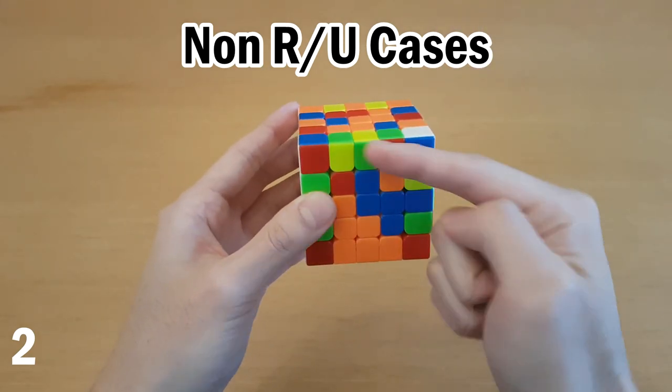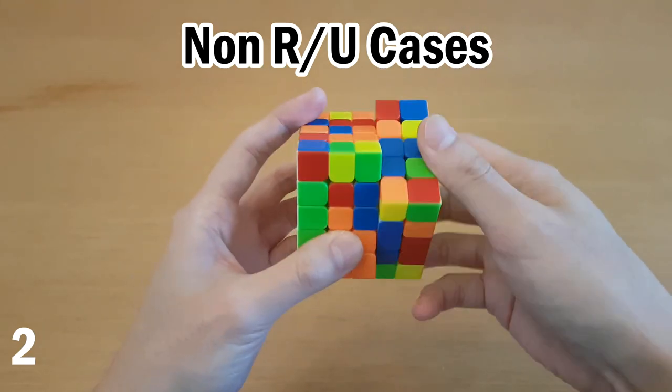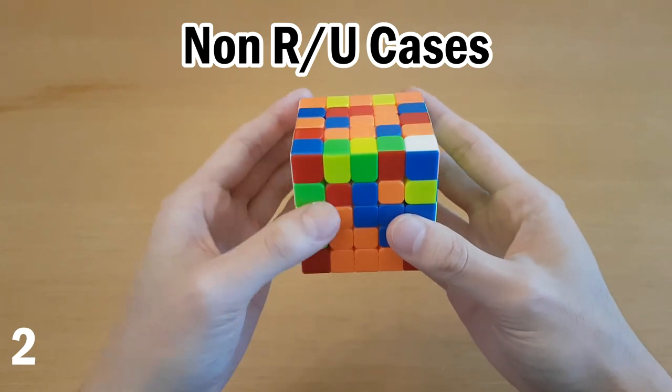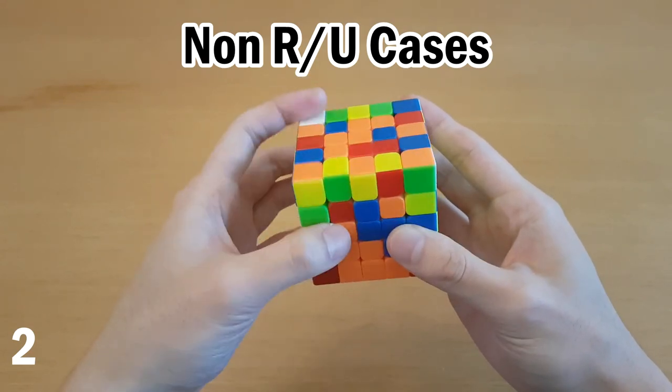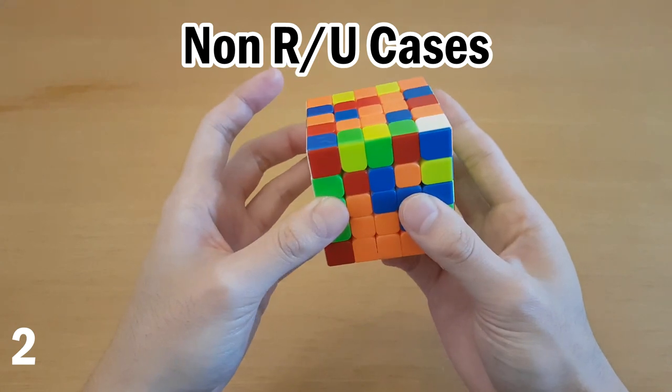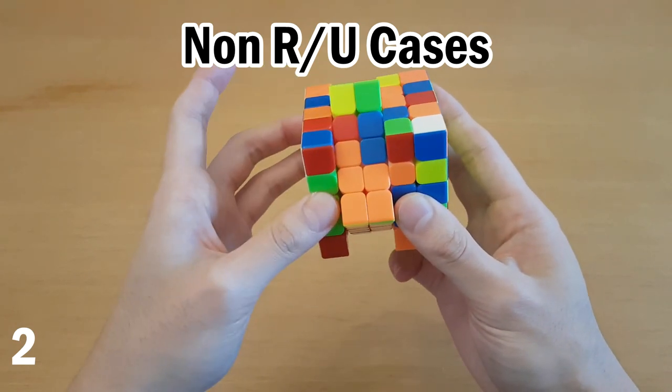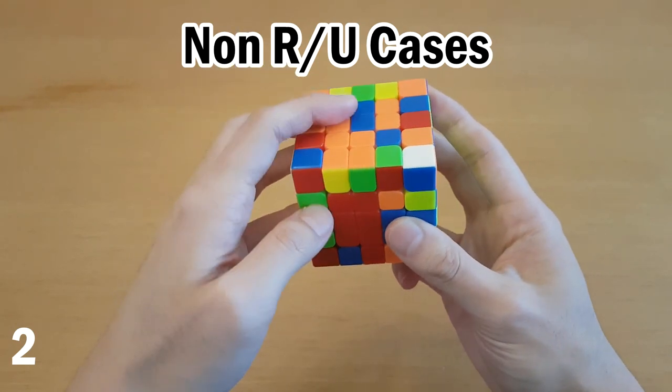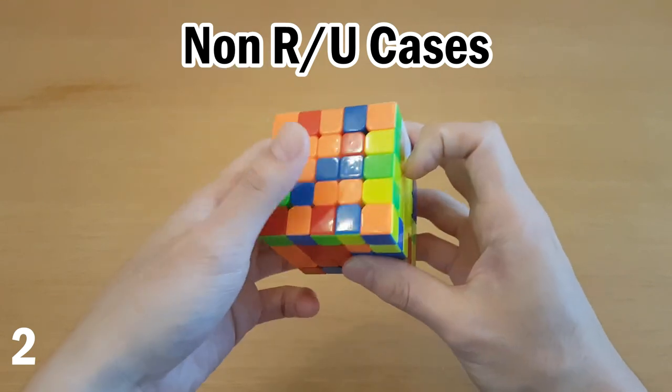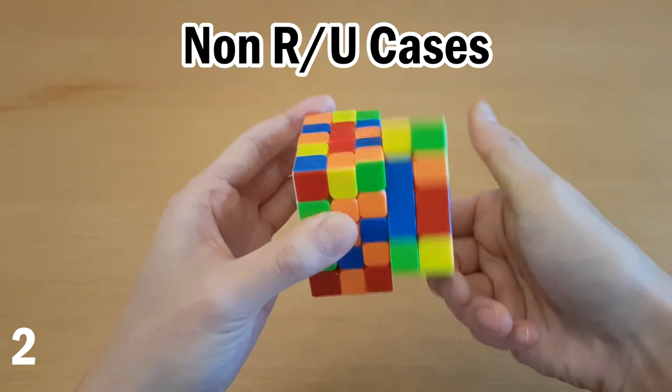And if you have this case, which is on the other side from the right side, so you can't solve it this way, and it's not the one that just pairs up properly right away, then what you can do is this slice move to move this one up and hide the bar and then move it into the right spot and undo the slice move with two moves. Then you can just insert it into the bottom normally.